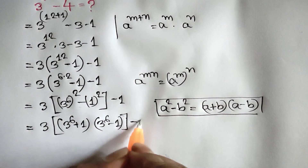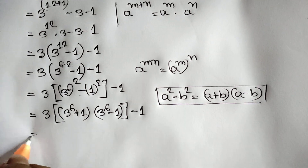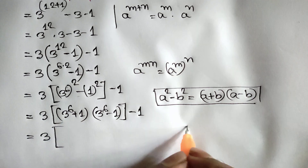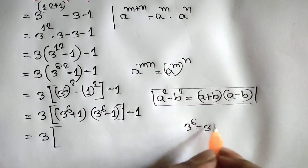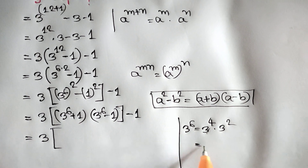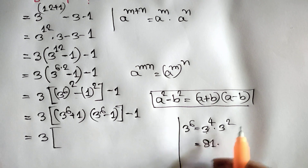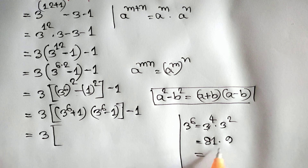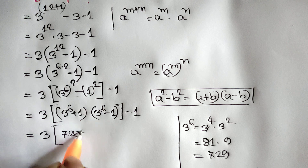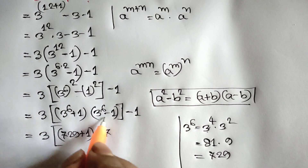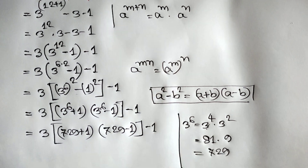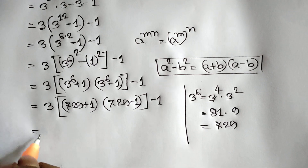And this negative 1 is equal to 3. Now 3 to the power 6 can be written as 3 to the power 4 times 3 squared. So we can write here 729 plus 1, times 729 minus 1, and this negative 1 is equal to 3.